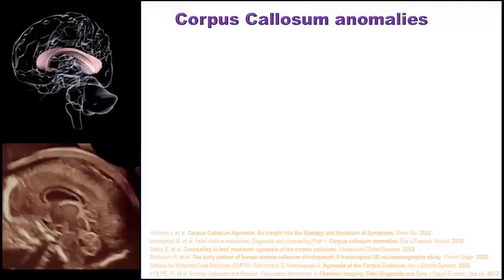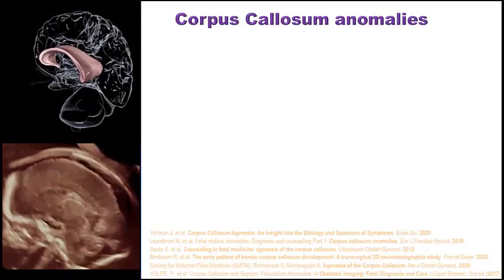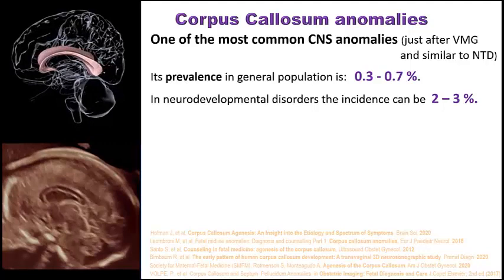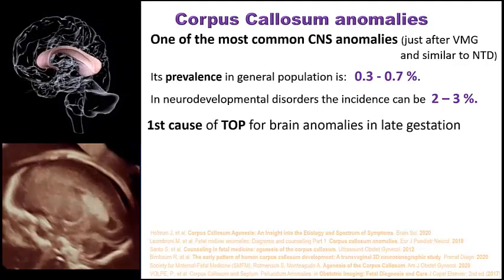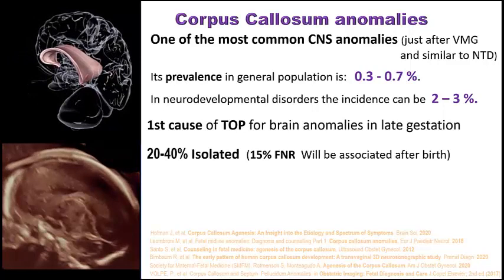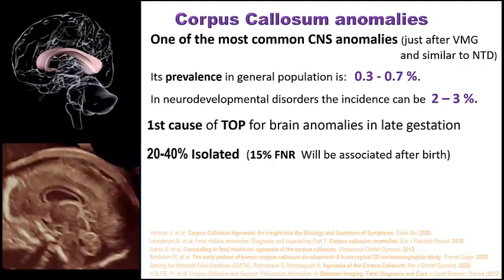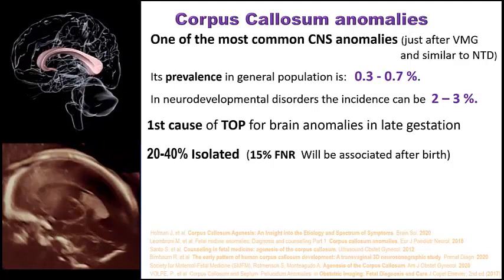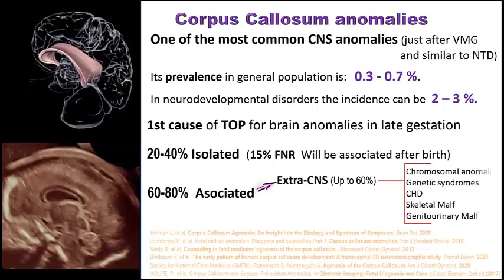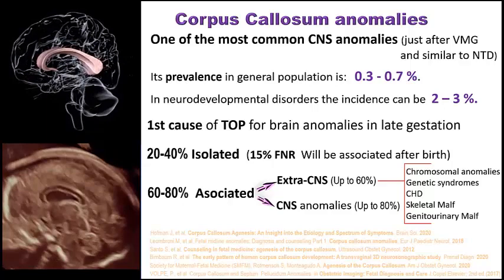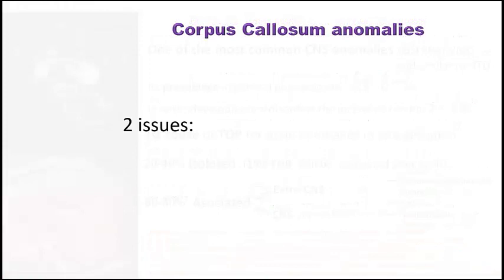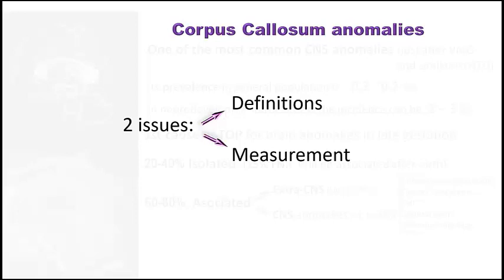The assessment of the corpus callosum is important because corpus callosum anomalies are one of the most common CNS anomalies, just after ventriculomegaly and similar to neural tube defects. They represent the first cause of termination for brain anomalies in late gestation. Around one third are isolated, although in 15% of these cases an associated anomaly will be detected after birth. Around two thirds are associated with other CNS or extra-CNS anomalies that will affect the prognosis. There are two issues I would like to comment: one is regarding definitions or nomenclature, and the other is about measuring it.